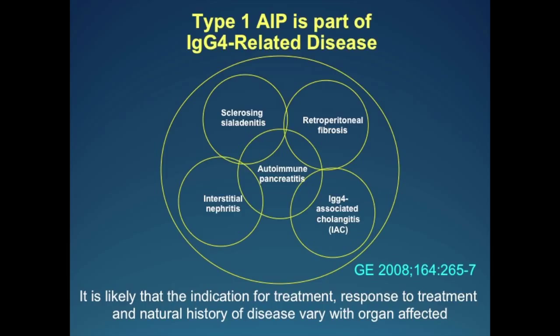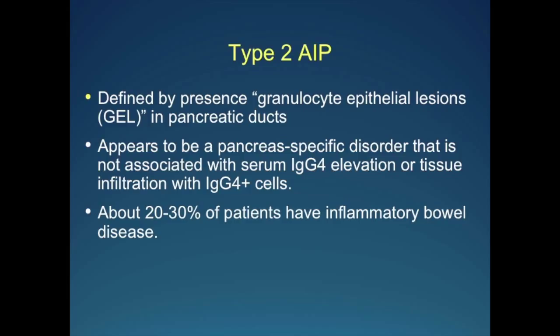What is type 2 AIP? It's actually defined by its histology so far. The characteristic histologic lesion is called a granulocyte epithelial lesion, or GEL, which is within the pancreatic duct epithelium. It appears to be a pancreas-specific disorder that is not associated with serum IgG4 elevation or tissue infiltration with IgG4-positive cells. And at least in the initial series, about 30% of patients have IBD.